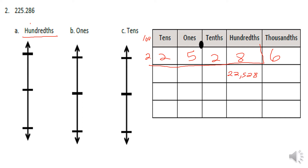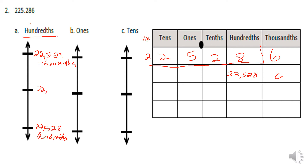It ends up being twenty-two thousand five hundred twenty-eight hundreds, six tenths, six thousandths. Since we're rounding to the hundreds, the bottom of our vertical number line is twenty-two thousand five hundred twenty-eight hundreds. The question is: is it twenty-two thousand five hundred twenty-eight hundreds, or twenty-two thousand five hundred twenty-nine hundreds? Right in the middle we'll have twenty-two thousand five hundred twenty-eight hundreds and five thousandths.